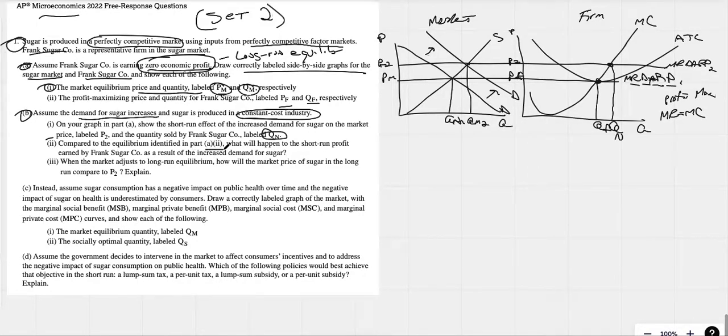Compared to the equilibrium identified in part A2, price and quantity PFQF, what will happen to the short run profit earned by Frank? Well, we can see that the price at P2 is greater than the ATC. When your price is greater than your ATC, we have what we call positive economic profits. So compared to the equilibrium identified in A2, which would have been right here, what will happen to the short run profits, we can see that profits are going to increase. Easy enough. No explanation, we just need to say that profits would increase.